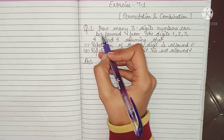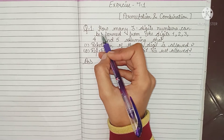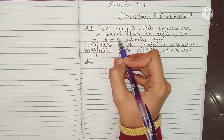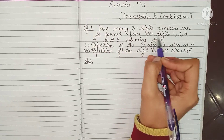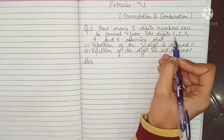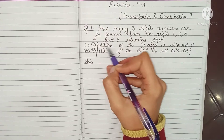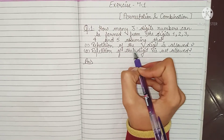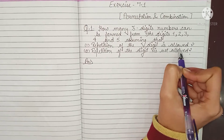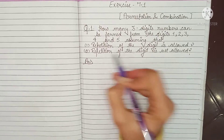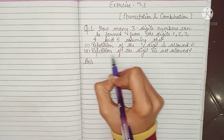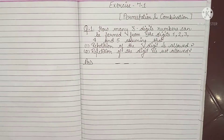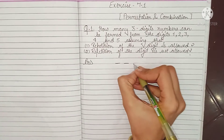Question number 1: How many three-digit numbers can be formed from the digits 1, 2, 3, 4, and 5? Assuming that repetition of the digit is allowed, and in the second part repetition of the digit is not allowed.